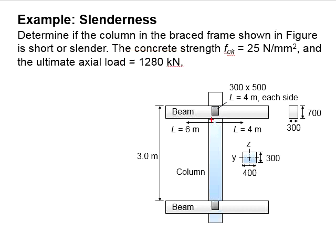The column here has a cross-section of 300 times 400 mm. It has an effective height of 3 m. There are beams at both sides of the column. The beam size is 300 times 700 mm. The beam length is 4 m on one side and 6 m on the other side.